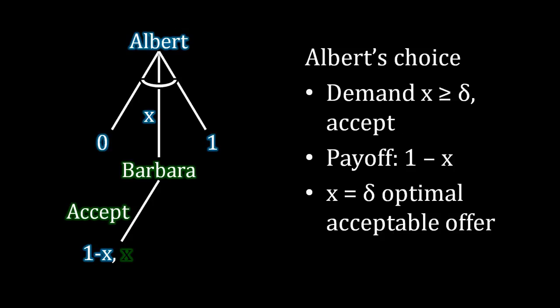In fact, in contrast, if he tries demanding x at least as big as delta, Barbara is going to accept. This gives Albert a payoff of 1 minus x, and because Albert's payoff is going to be smaller as delta is larger, the way he maximizes his payoff here is to offer the smallest amount that Barbara is willing to accept. And the smallest amount that Barbara is willing to accept is x equal to delta. So this means that we have a solution here.